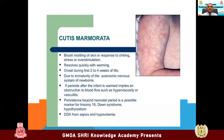If cutis marmorata persists after the infant is warmed, it implies an obstruction to blood flow such as hyperviscosity — like high PCV — or vasculitis. Persistence beyond the neonatal period is a possible marker for trisomy 18 and Down syndrome. If it disappears by two to four weeks, you don't have to worry. But if it doesn't disappear, check the PCV and think about certain syndromes presenting with cutis marmorata, like trisomy 21 and trisomy 18. Subconjunctival hemorrhage is very common after normal vaginal delivery. When the baby's head gets stuck in the vagina, small vessels in the eyes get ruptured and bilateral conjunctival bleeding can occur.